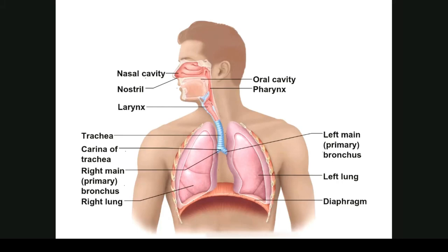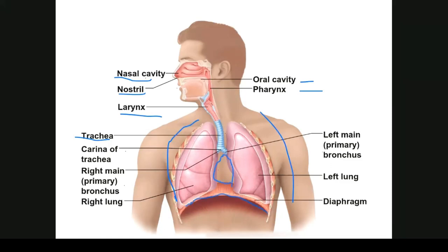Here are some parts of the respiratory tract. We have our nasal cavity, nostril, larynx, trachea, oral cavity, and pharynx. Our right lung has three lobes. Our left lung has two lobes, leaving space for the heart. The diaphragm contracts by pulling down. When it relaxes for breathing out, it moves back up.